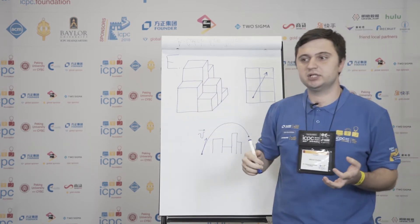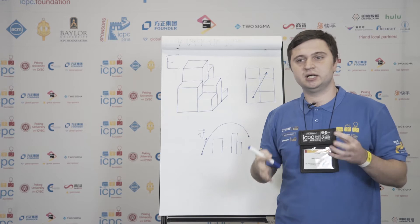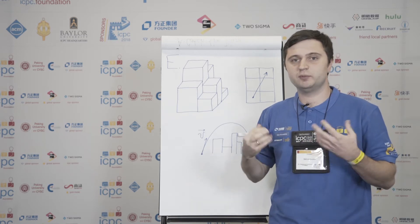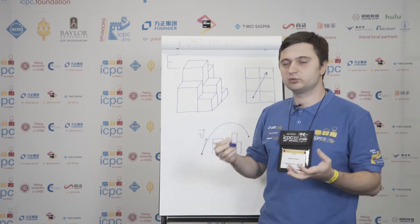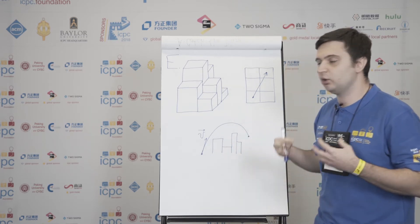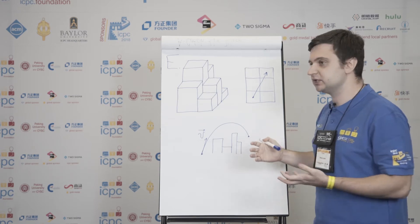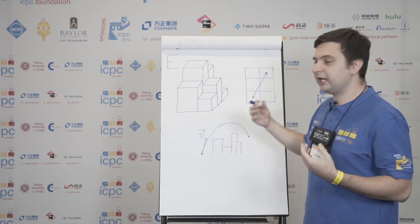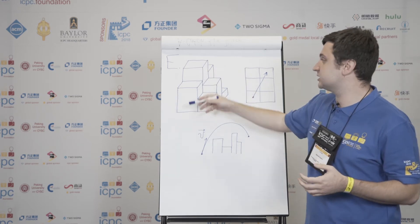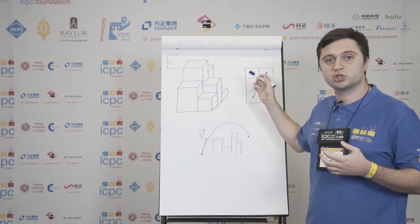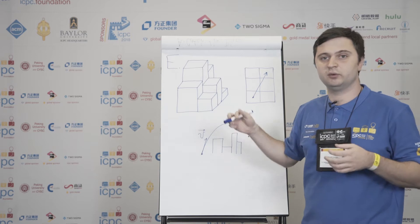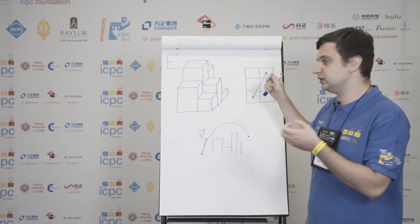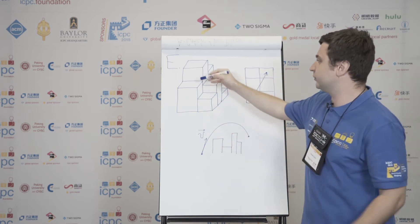This problem is mostly about implementing your physics and geometry code accurately, because the overall solution is quite easy to understand. Since the dimension of the city is only 20, we have time to process all the edges in this graph.